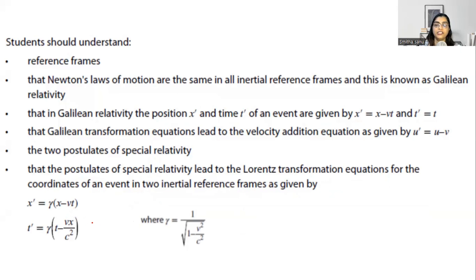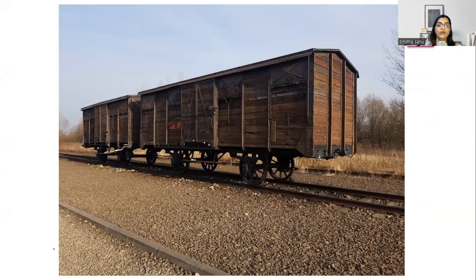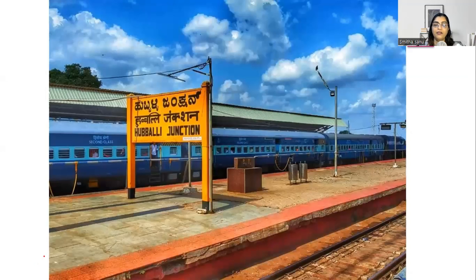Let's start our session with an example. Look at this bogey. Imagine that you are inside this bogey, which is without any windows. If you have a companion with you inside, how would you explain to that person whether you are at rest or in motion? It's difficult, right? On the other hand, when you are in this train, it's easier to look outside and see whether you are moving or not.